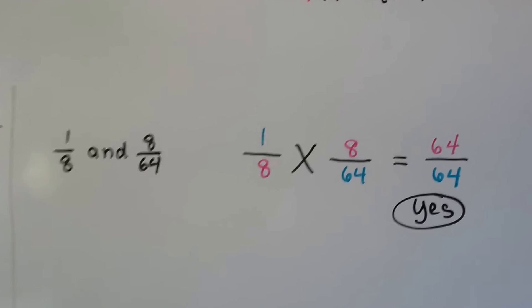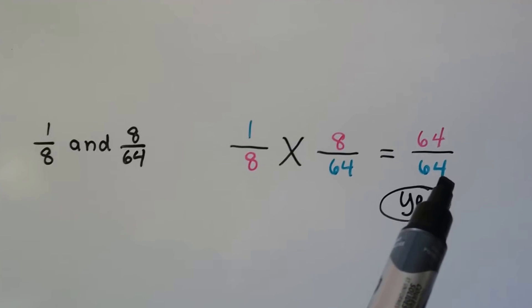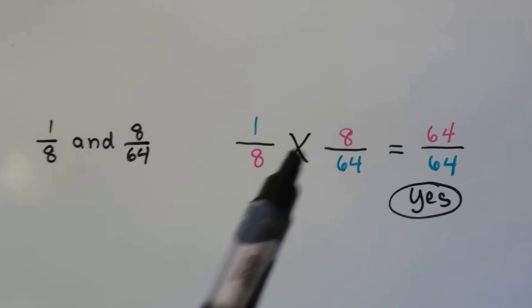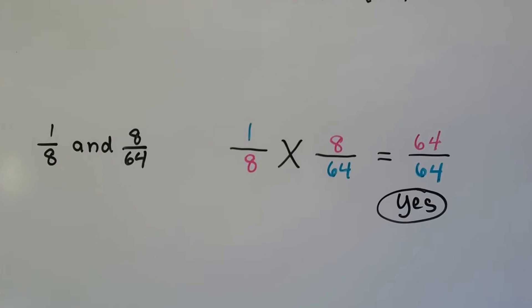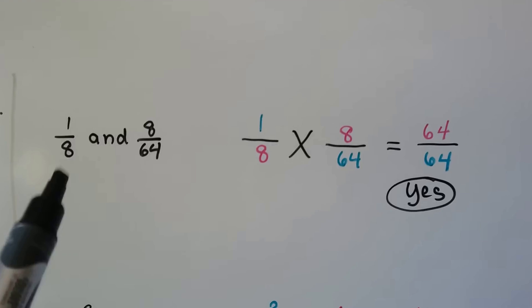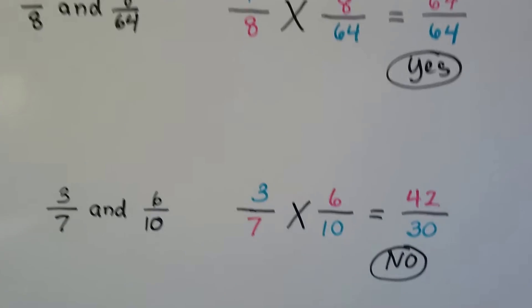We've got one-eighth and eight-sixty-fourths. We multiply the one to the sixty-four and get sixty-four. We multiply the eight to the numerator eight and get sixty-four. Same product. So yes, these are both equivalent to each other. They represent the same amount.